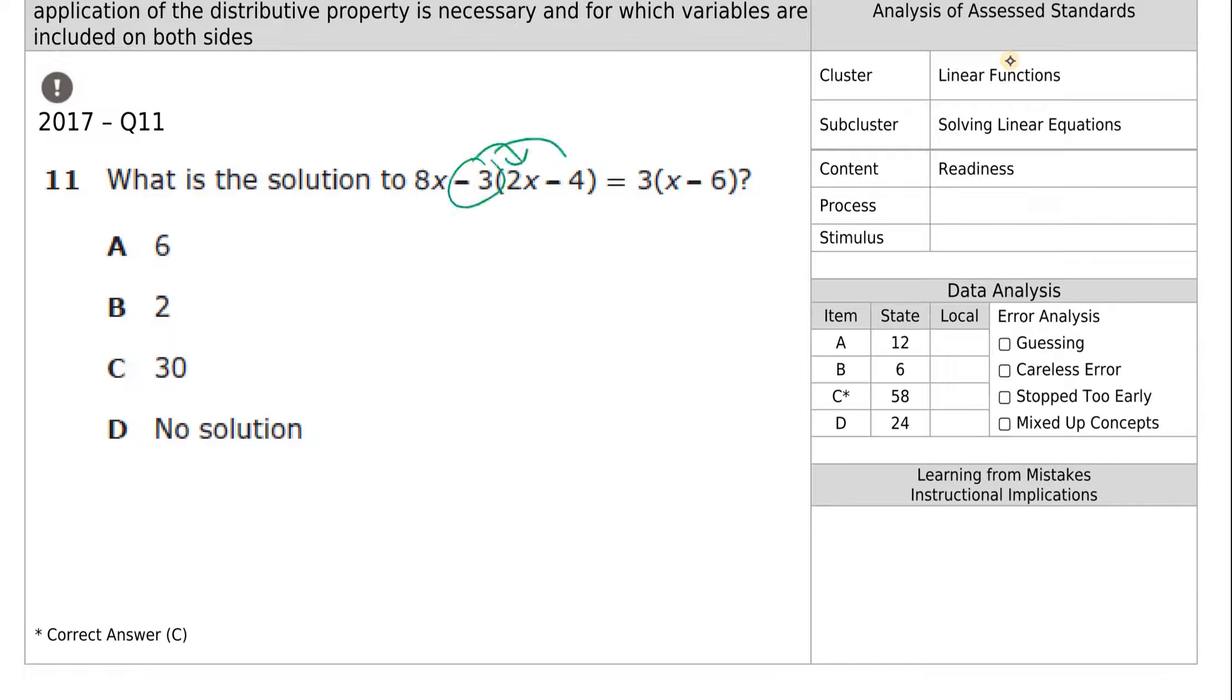Negative 3, distribute, distribute. Positive 3, distribute, distribute, so we have the 8x. Negative 3 times positive 2 is negative 6x. Negative 3 times negative 4 would give us positive 12. Positive 3 times x is 3x. Positive 3 times negative 6 is negative 18. We have two variables over here.